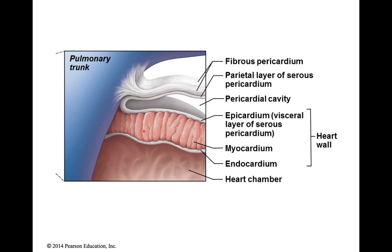Outside of that is your thickest layer of tissue called the myocardium. From our last section, you know that the prefix myo always refers to muscle. So the myocardium is the cardiac muscle.